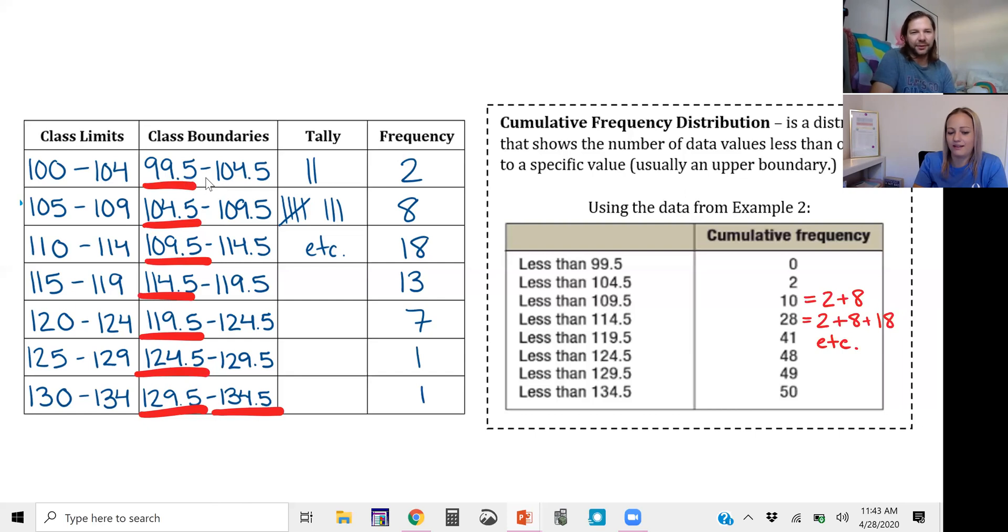Well yeah, I mean the lower class boundary is the upper class boundary for the previous class, so it's confusing. You can either use the first column or the second column, but if you use the second column then you have to make sure you also include the 99.5. Cool. All right, so I think we have one more slide to go through in this section.